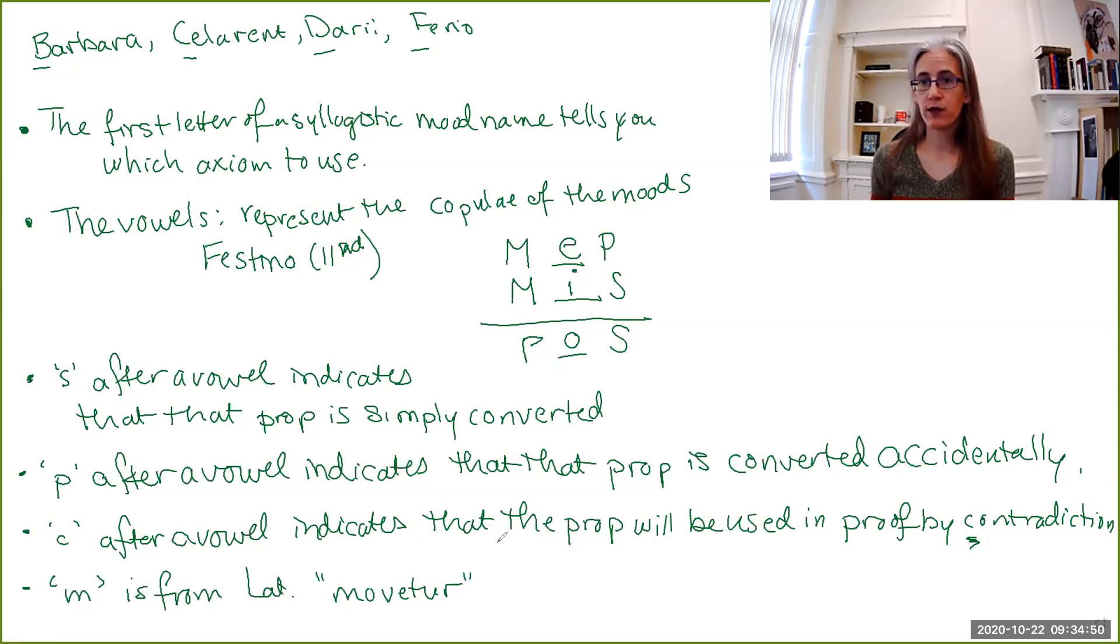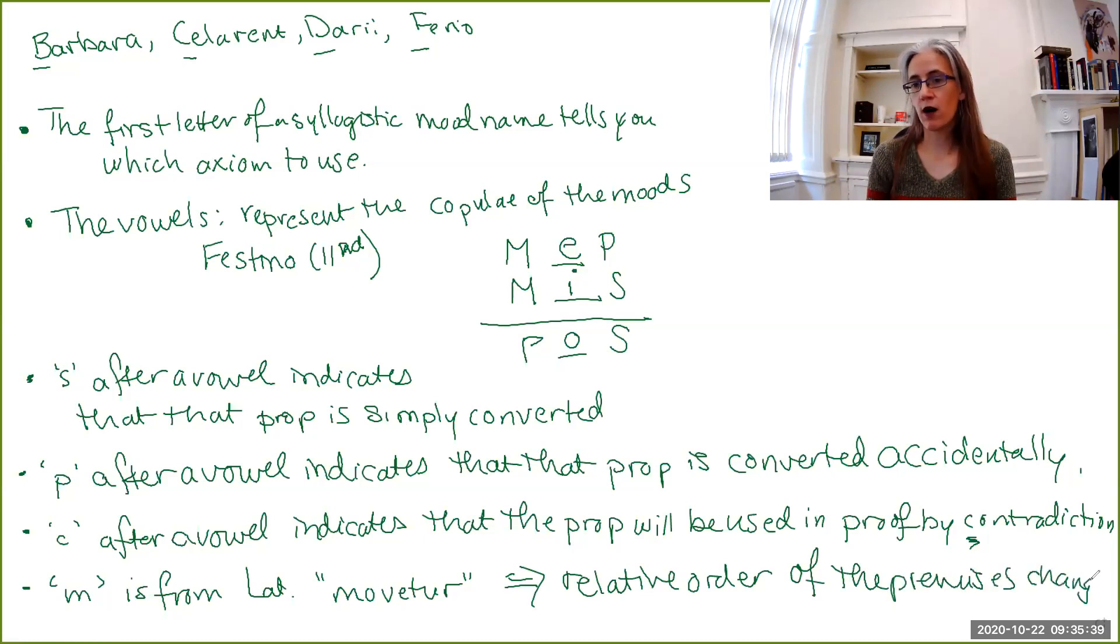M is from the Latin word movetur, which means is moved. So there are a number of different ways that premises can be moved in a proof, either because we do reiteration on it, so it ends up just at a different place in the proof than it started with, or it could be that the relative order of our premises changes simply because we've applied another rule. So for instance, if we had our two categorical premises and I applied simple conversion to the first one, then that counts as a move because the relative order of the two premises has changed. So this one just indicates that the relative order of the premises changes or is swapped. And then all other letters are for pronunciation, just so that we have something that trips nicely off the tongue.